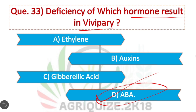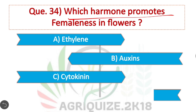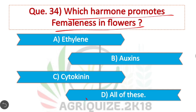Question 34: Which hormone promotes femaleness in flowers? Ethylene, auxin, and cytokinin — all these cause femaleness in flowers. Option D is correct. They increase the number of female flowers in plants.